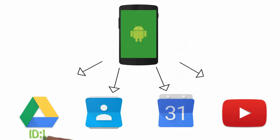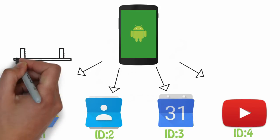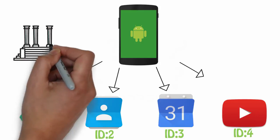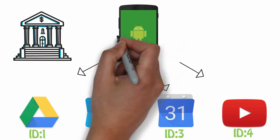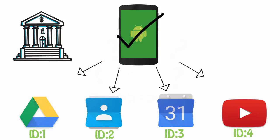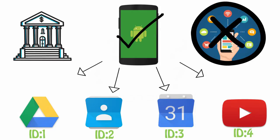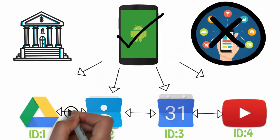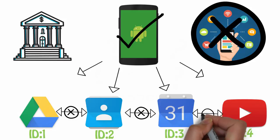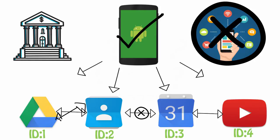For example, if you install your bank's application, its data will be stored so that it's only accessible by the bank's application — other applications on your device can't snoop on it. On standard Android configuration, no app can access any other app's data, no matter how many permissions the app asks for. This changes on a rooted device, as an application with root permissions can read other apps' data.